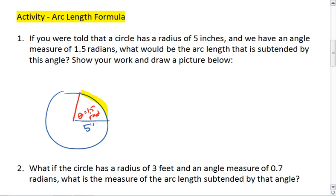Well, if we have 1.5 radians, that means 1.5 radius lengths fit on this arc length, so we get 5 inches plus 2.5 inches for a total of 7.5 inches. Or you could have said we have 1.5 times 5 inches, which is a 7.5 inch arc length.